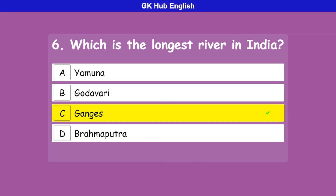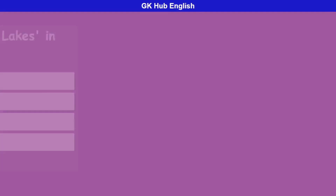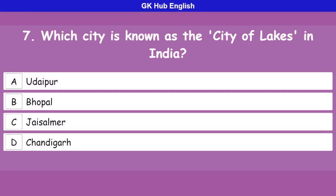Question 7: Which city is known as the City of Lakes in India? Option A is Udaipur, option B is Bhopal, option C is Jaisalmer, option D is Chandigarh. Correct answer is Udaipur.